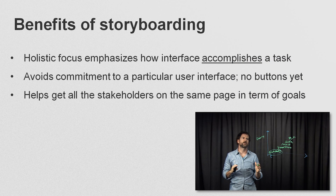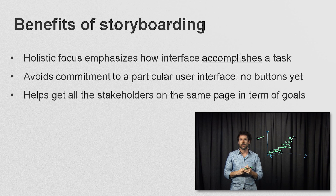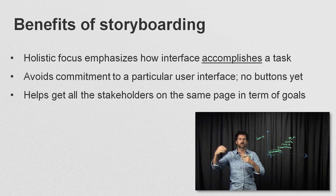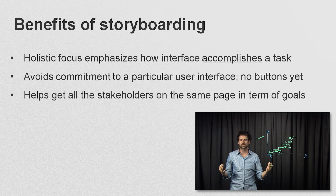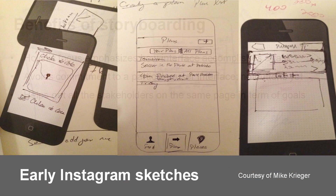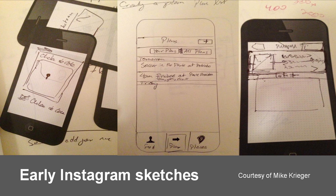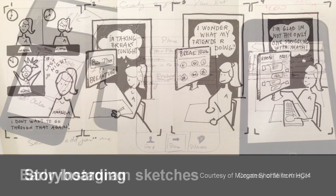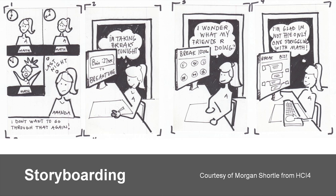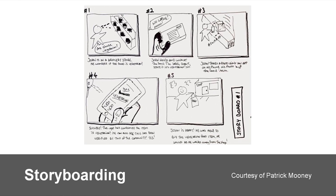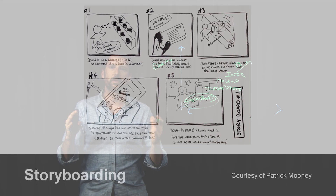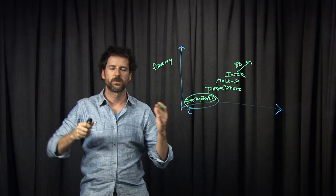This holistic focus helps you understand how the interface accomplishes the task and avoids commitment to a particular user interface. It helps all the stakeholders — the clients, developers, design team, management — everybody get on the same page. If you have a compelling storyboard, you can say, let's build this. Here's another example of a storyboard from our online class, and here's a third example, courtesy of Patrick Mooney. All of these storyboards take you from a setting to satisfaction.